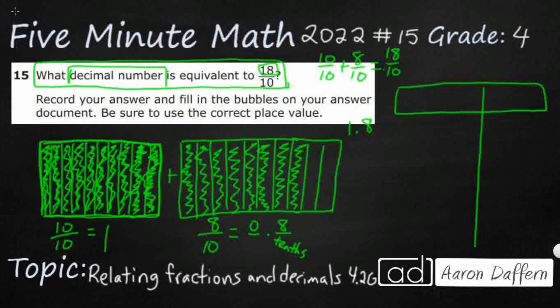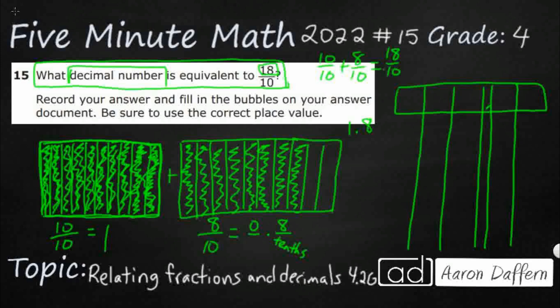Going to our bubble sheet, we have two digits to the right and three digits to the left. We're just going to bubble in 1.8, or one and eight-tenths, and bubble in the numbers underneath.